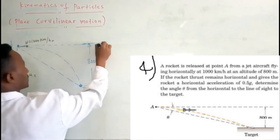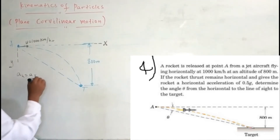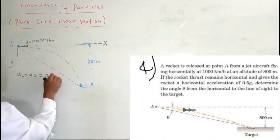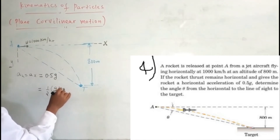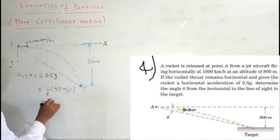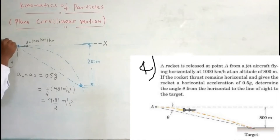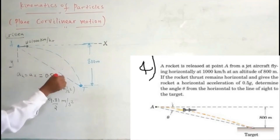The horizontal direction is the x-axis. A_X is the same as the linear direction. Acceleration along the horizontal direction is 0.5 times gravity. That means 1 over 2 times gravity, approximately 4.9 meters per second squared. We are asked to calculate the angle between the line of sight to the body.